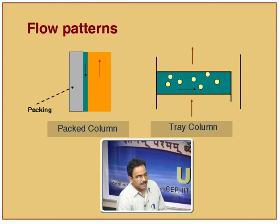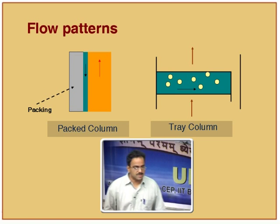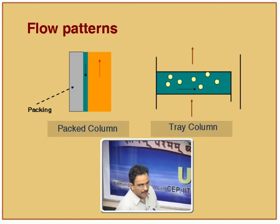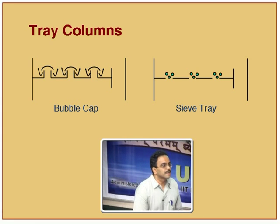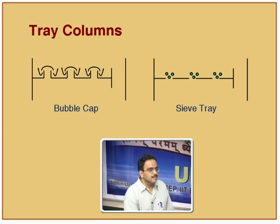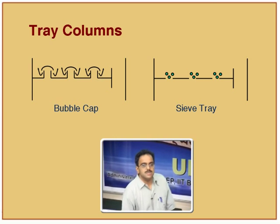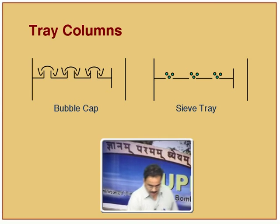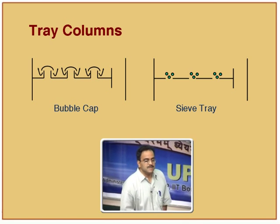Tray columns come in two main types: bubble cap and sieve tray, with many modern modifications aimed at achieving good mass transfer with low pressure drop. Bubble caps provide more residence time on the liquid pool and offer more flexibility in operating the L/G ratio — the possibility of weeping in a sieve tray is much higher compared to bubble caps. These topics form the base for further discussion on column internals and efficiency.